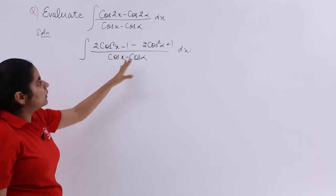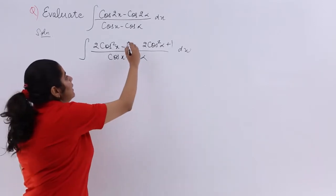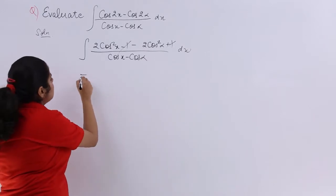Now you see something can be done. Yes, I can cancel minus 1 and plus 1. What is the next step?